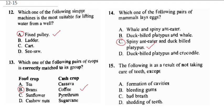Question 15 says: the following are results of not taking care of teeth, except. When you don't take care of your teeth, you can form cavities, have bleeding gums, or have bad breath. But shedding of teeth is actually what happens to six to seven year olds where their teeth fall off to grow the mature permanent teeth. So the correct answer is D — shedding of teeth is not a result of neglect; it happens to every individual.